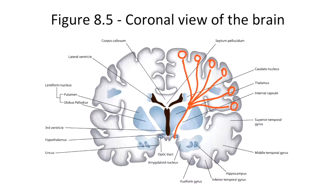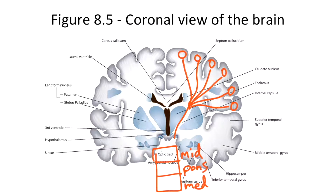Once past the internal capsule, the axons decussate just above each lower motor neuron in the brain stem. The brain stem consists of the midbrain, the pons, and the medulla. The lower motor neurons of the cranial nerves are located within the brain stem, and these are also called cranial nerve nuclei.